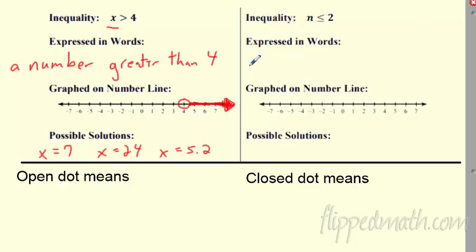What about this inequality? If I read this, n is a number. That's what? It's a number that is less than. That's the less than sign. Less than or equal to 2.